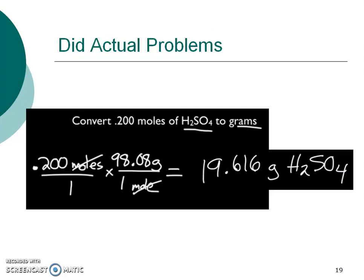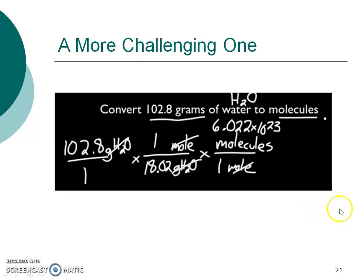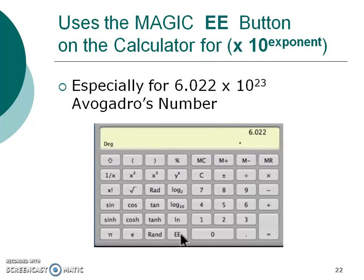He did some conversions, talked about finding the formula mass or the molar mass of substances, and then did those conversions. In the example, we go from moles to grams — it's a one-step problem. Keep that in mind, because then he talked about sig figs. I'm not too worried about sig figs; I like everything to be two decimal places, so I would have done 19.62 grams. He also did a challenging one going from grams to molecules — notice that's a two-step process. It's going to be real important to understand one-step versus two-step problems. He also talked about that magic EE button, which helps us especially with Avogadro's number when we're dealing with times 10 to an exponent.